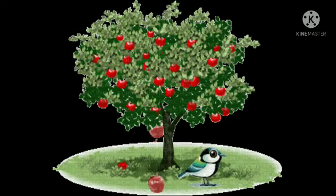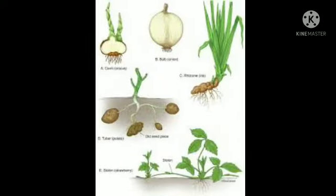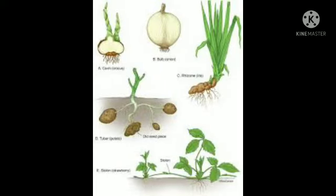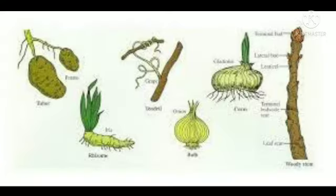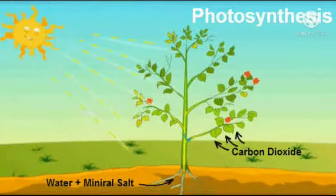The food prepared by the leaves is in the form of glucose, a kind of sugar called carbohydrate. The excess food is converted into starch and stored in the roots, stems, leaves, fruits, and seeds of the plants.